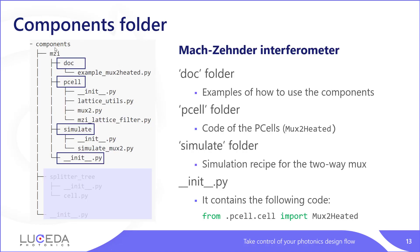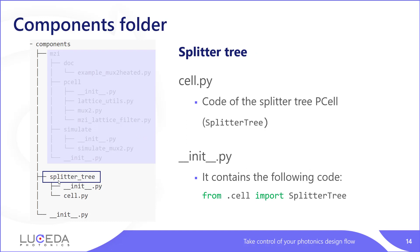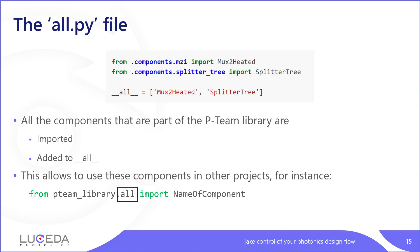The components folder contains all the components. For instance, in the PDK there is an MZI folder structured just the same as SyFab, with a doc folder containing clean and well-worked-out examples on how to use a particular component, a pcell folder which contains the source code of the pcell, and a simulate folder which contains recipes to simulate this MZI. There is also an init file so it can be imported by Python. The splitter tree only contains one cell and doesn't have simulation recipes. The all file just imports all of those components — here we import mux2heated and the splitter tree and add it to all.